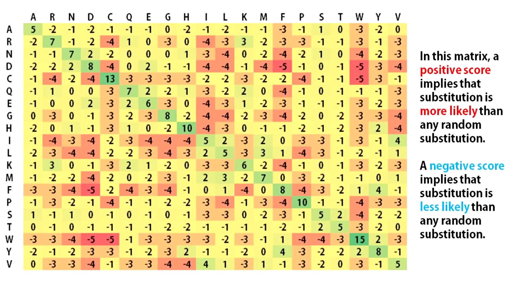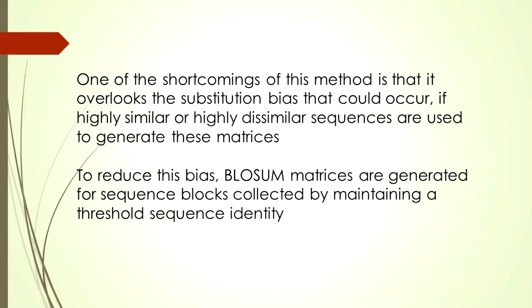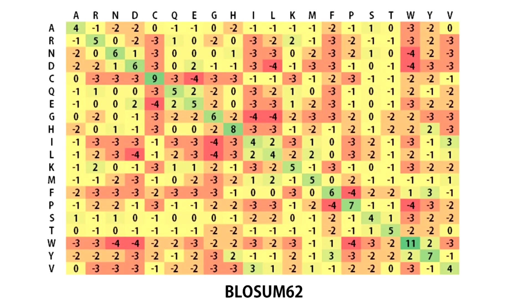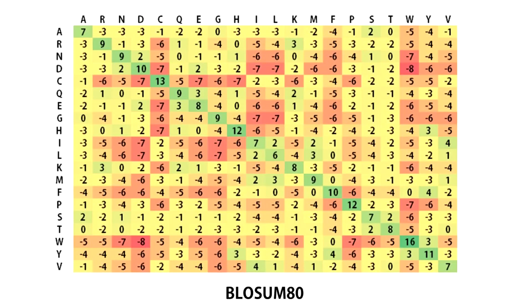In this matrix, a positive score implies that the substitution is more likely than any random substitution. A negative score implies that the substitution is less likely than any random substitution. One of the shortcomings of this method is that it overlooks the substitution bias that could occur if highly similar or highly dissimilar sequences are used to generate these matrices. To reduce this bias, BLOSUM matrices are generated for sequence blocks collected by maintaining a threshold sequence identity. The matrix built from blocks with no more than 62% sequence identity is called BLOSUM62. Similarly, there are other BLOSUM matrices like BLOSUM80, BLOSUM90, and so on.